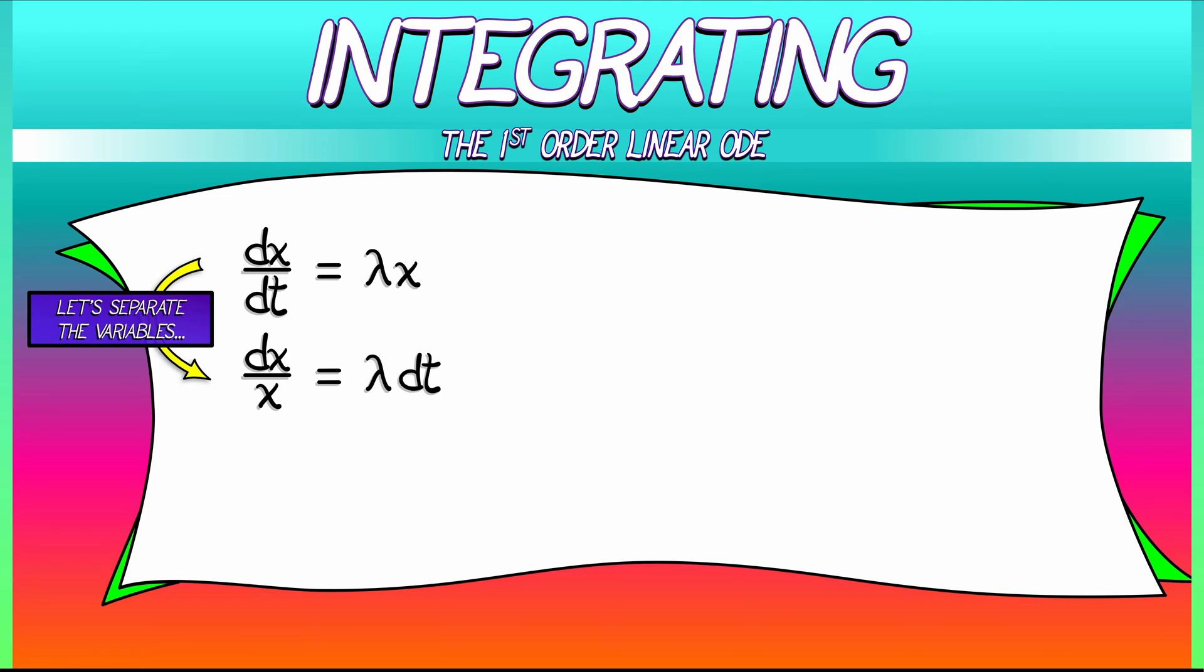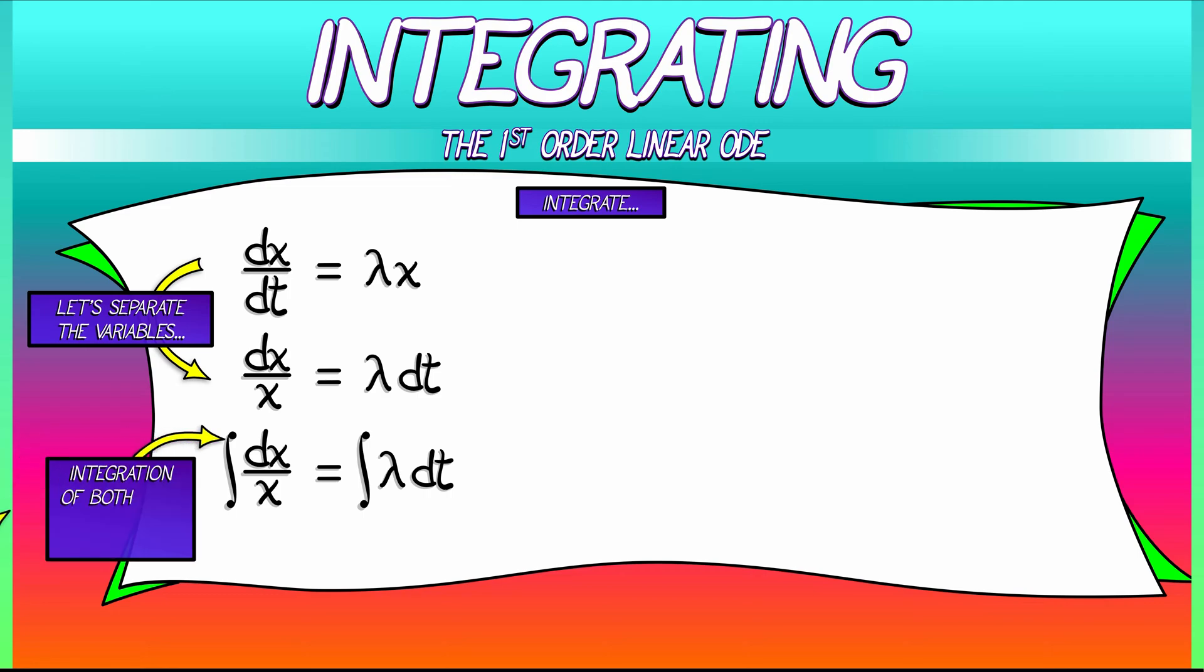Now these differential expressions are things that can be integrated. The next step, the important step is you integrate both sides. So we have the integral of dx/x equals the integral of lambda dt. And since we're doing the same thing to both sides of the equation, it is still a true equation.